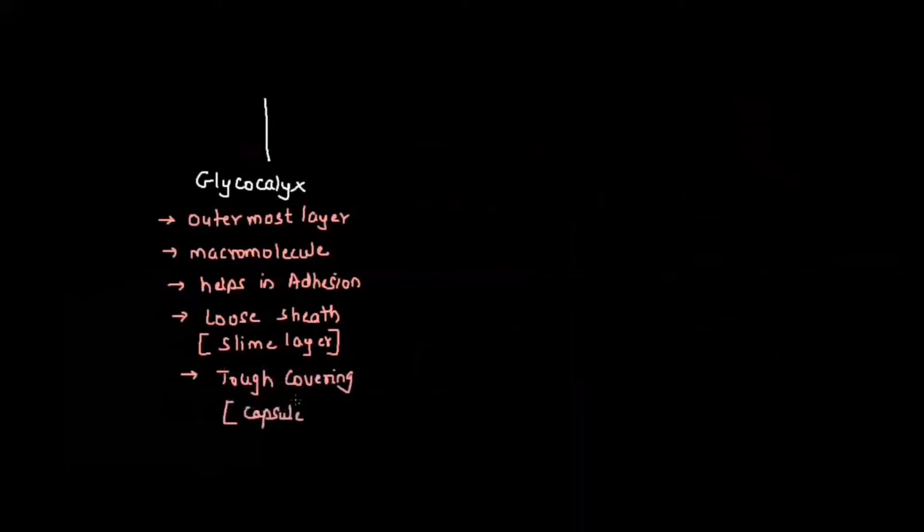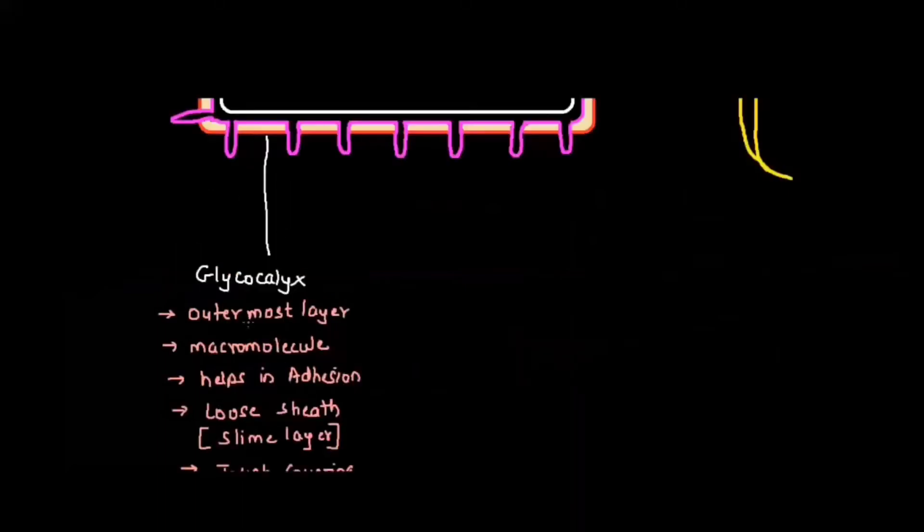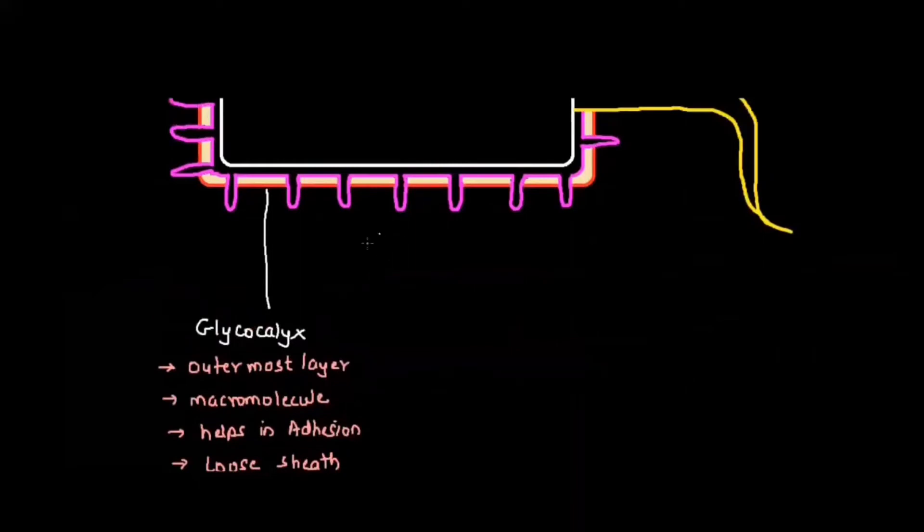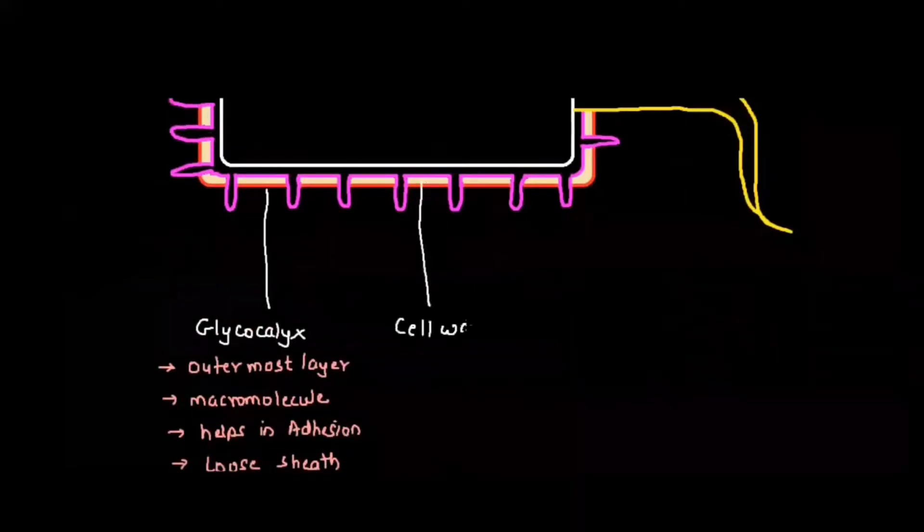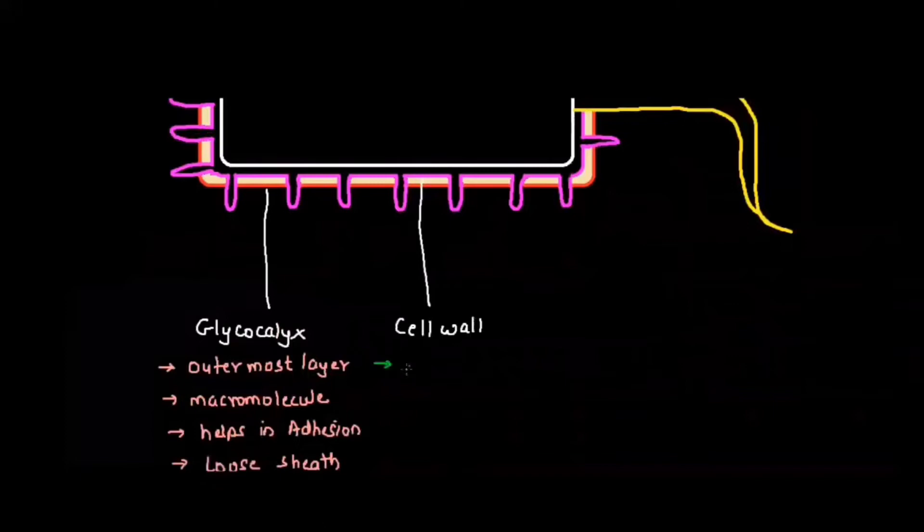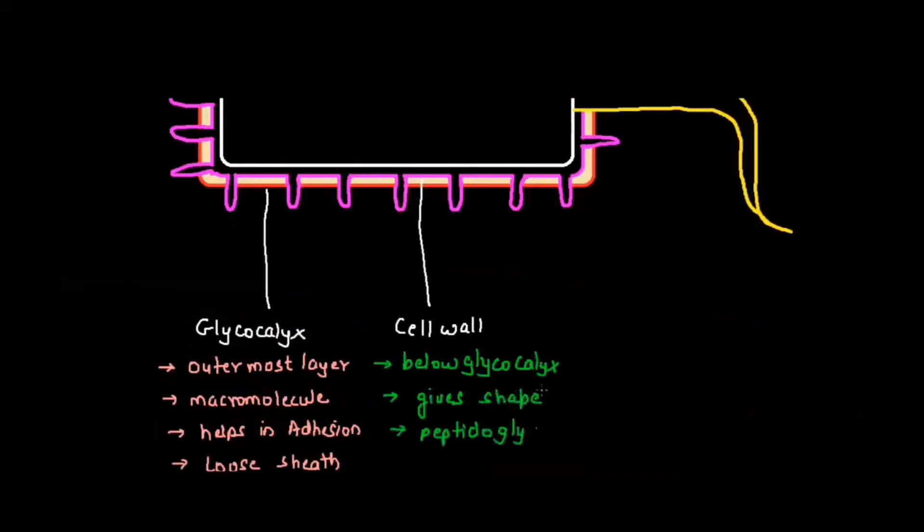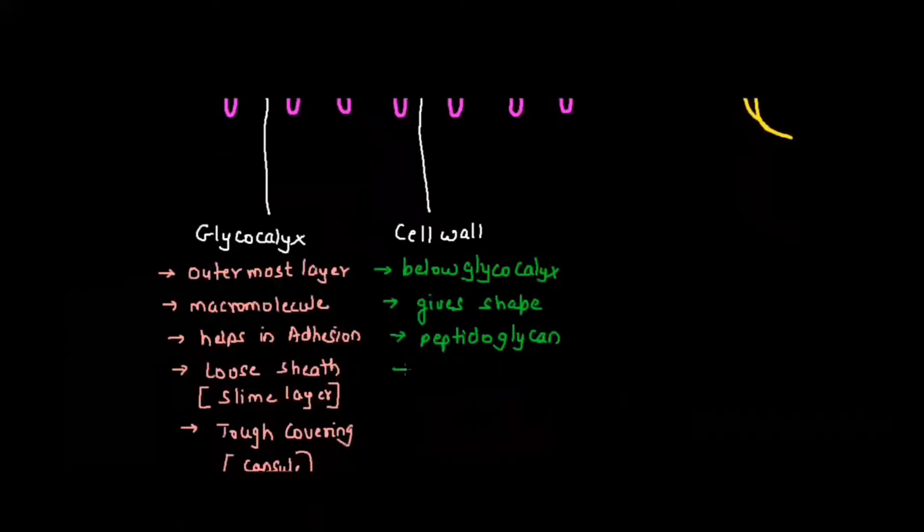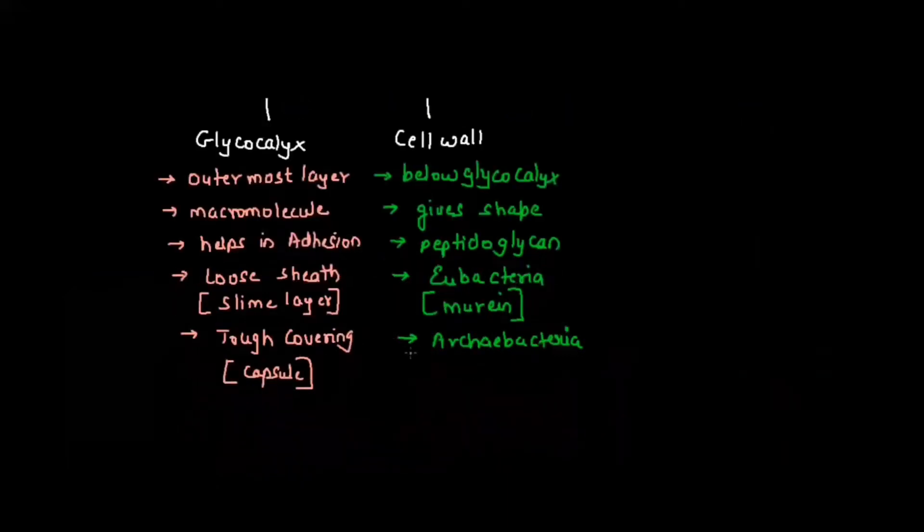Inner to glycocalyx, we get the cell wall. The cell wall is below the glycocalyx and gives shape to the bacterial cell. It is made up of peptidoglycan. In eubacteria, the cell wall is made up of murein. In archaebacteria, the cell wall is made up of pseudo-peptidoglycan.